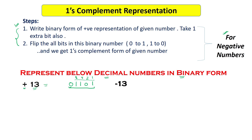Now let's take a negative number, minus 13. To convert this into one's complement binary form, we follow specific steps. First, we write the positive 13 in one's complement binary form. We have just seen that +13 is represented as 01101, where the leading 0 indicates the sign, just as in sign-magnitude representation.